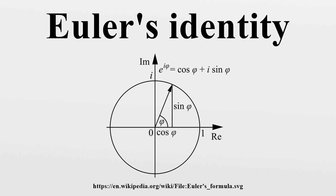which states that for any real number x, where the inputs of the trigonometric functions sine and cosine are given in radians. In particular, when x equals π, or one-half turn around a circle,